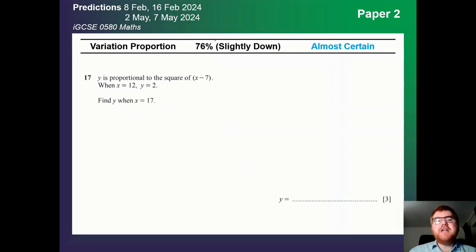On to variation and proportion. Slightly down at 76%, but still in the almost certain category. And this is a very typical kind of question here. Proportional to the square of something and then some detail. I noticed one of the very latest November 2023 questions put some kind of strange words in as well. So be aware these questions are not always standard anymore. You will need to revise this very carefully.